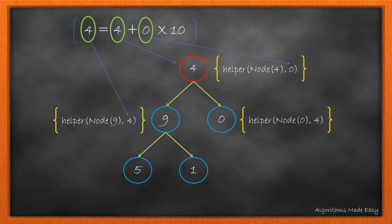When we call the method for left and right subtrees, we pass the node as left and right, and sum as temp sum multiplied by 10 added with the current node value. So in our case, we call the method for node 9 by passing 9 and the updated sum as 4.